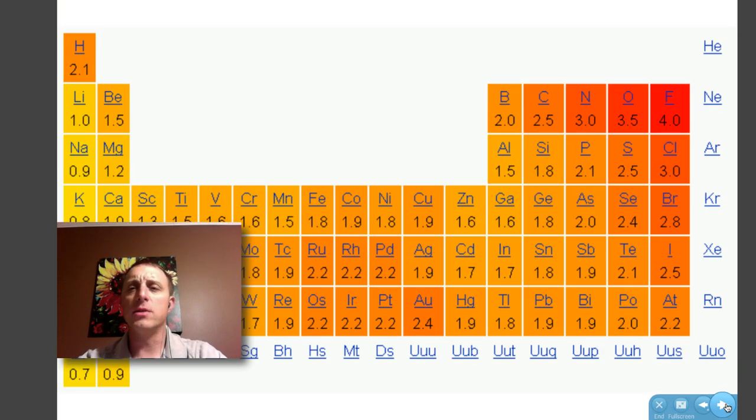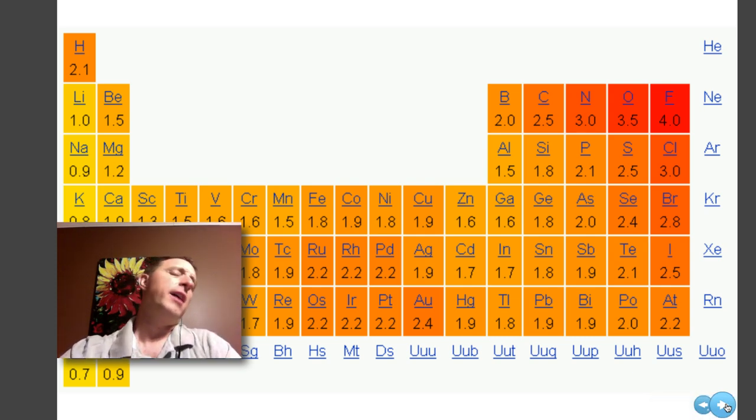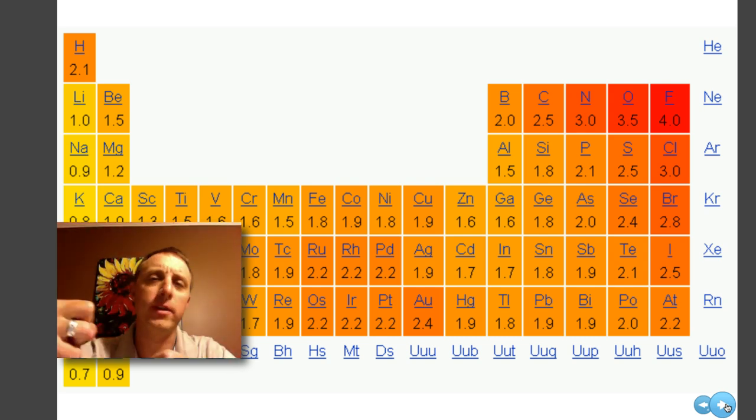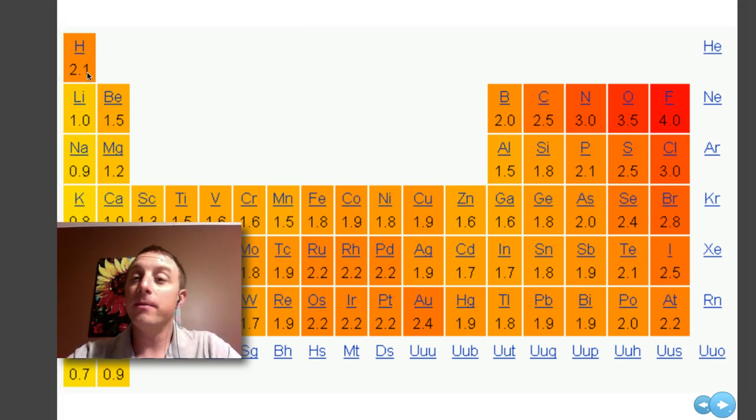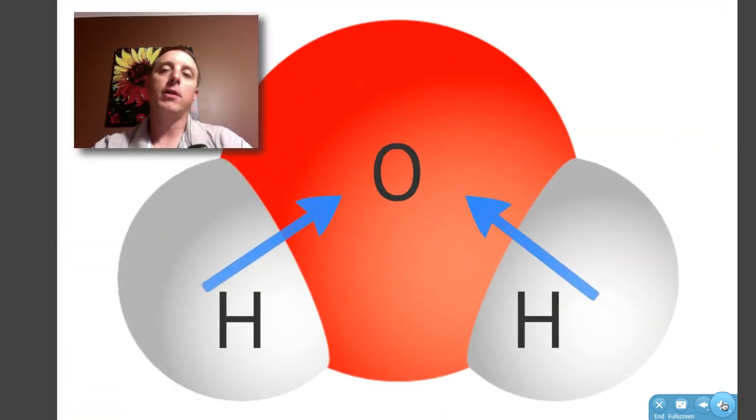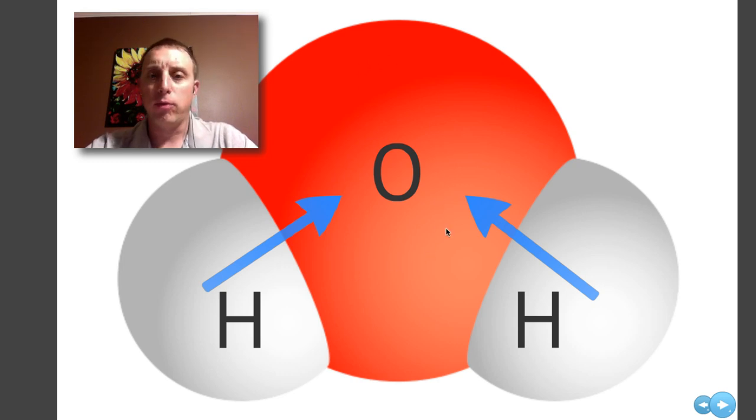What if we have two atoms where the electronegativities are kind of far apart, but not so far apart where one can just pull the electrons from the other? Let's take oxygen at 3.5 and hydrogen at 2.1. They're kind of far apart, but not as far as we saw with sodium and chlorine. What happens there is you have what we call an unequal sharing. Oxygen here, this big red atom in the middle, is able to pull the electrons closer to it than the two hydrogen atoms can. Hopefully you all recognize this as a water molecule, H2O. The electrons tend to spend more time around the oxygen atom than they do around either hydrogen atom.